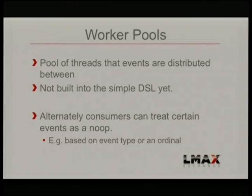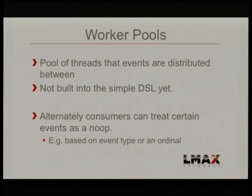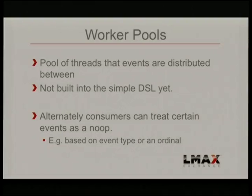In all of those examples, each consumer sees every event — multiple threads and every event goes to those threads. There are times when instead of that, you actually want a pool of workers where the event is processed by one of those workers and other threads work on other events. To do that with the Disruptor, you can use a worker pool. It's built in, though it's not yet built into the simple DSL — we've been working on that and it's pushed up in a branch, hopefully making the Disruptor 3.0 release. The downside of using a worker pool is that it inherently brings some contention back into the system, because you've got multiple threads trying to pull the next event, so it is slower. You need to make sure you get enough benefit from parallelizing those tasks to make up for the cost of getting data into those threads.